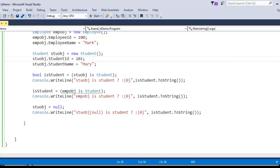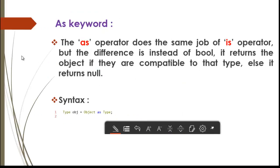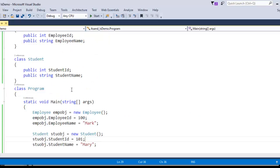Now let me jump back to the presentation and learn about the 'as' keyword. The 'as' operator does the same job as the 'is' operator, but the difference is: instead of returning a boolean value, it returns the object if it is compatible with that type. If it is not compatible, it returns null. The syntax is: 'Type obj = object as Type'.